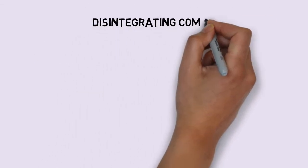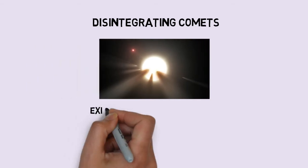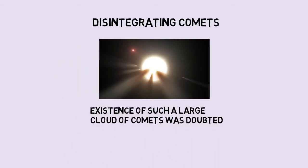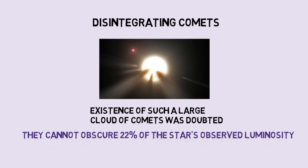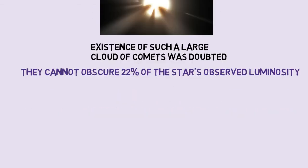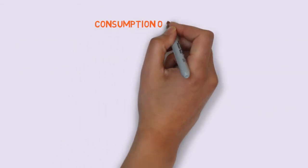Another theory was about disintegrating comets around the star. The existence of a large cloud of comets was doubted by the astronomers. However, the cloud cannot account for the 22% of the star's observed luminosity. And also, no such evidence was found of such a large comet cloud.